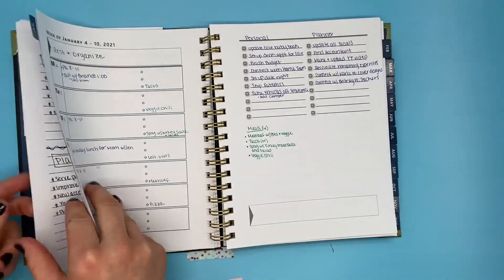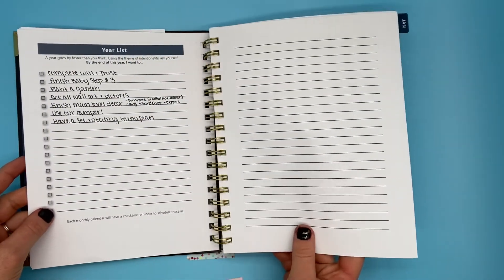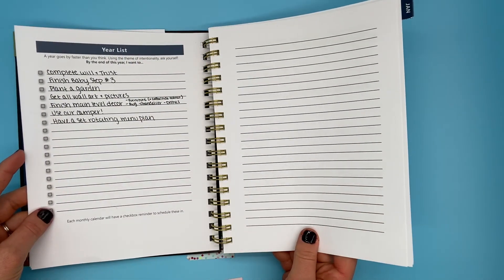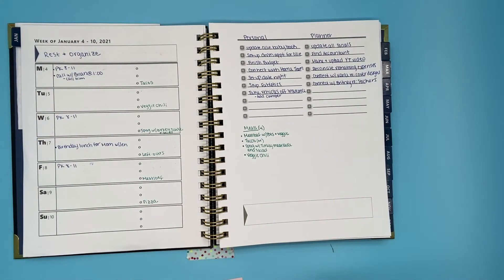Lastly, I take a peek at my year list and see if there's anything on there that I want to be planning or doing that week. Again, since this is the week of rest, I don't add anything, and that is really my planning of the week in a nutshell.